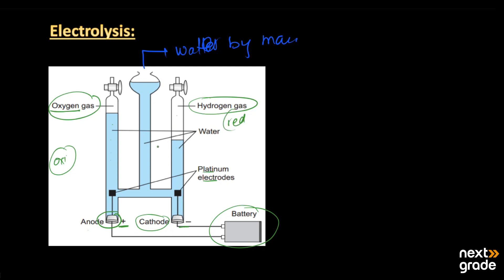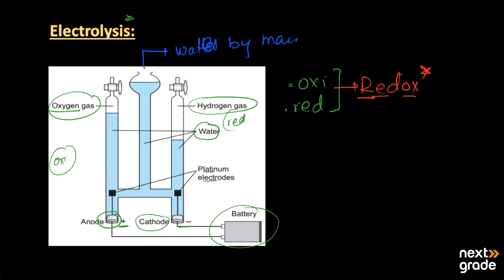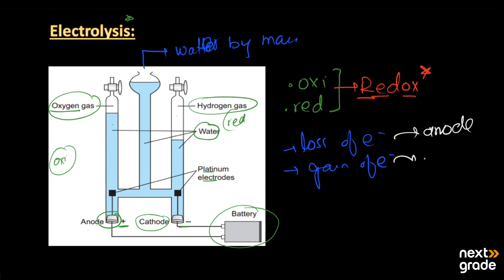Both electrodes are also immersed in water, since we are studying the electrolysis of the water molecule. Both the processes of oxidation and reduction take place, and overall this is called a redox reaction — 're' from reduction and 'ox' from oxidation. On one side there is a loss of electrons and on the other side there is a gain of electrons; oxidation takes place at the anode and reduction takes place at the cathode.